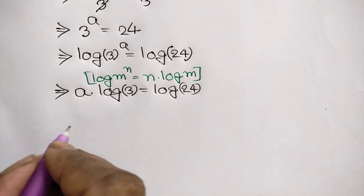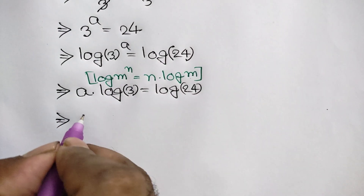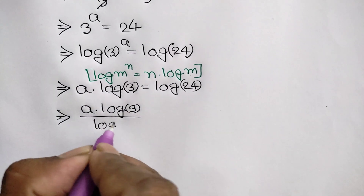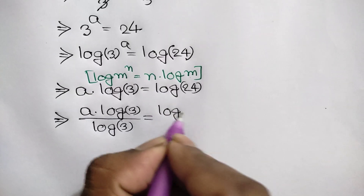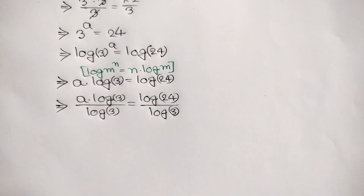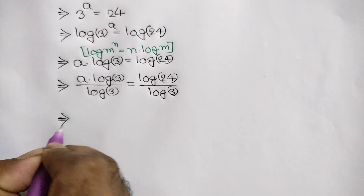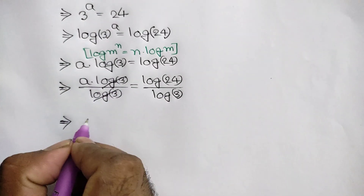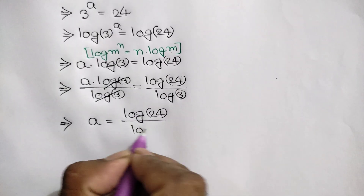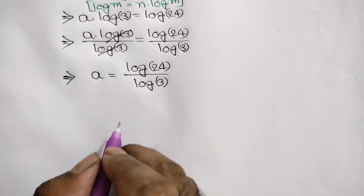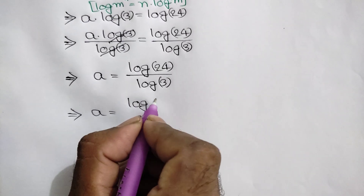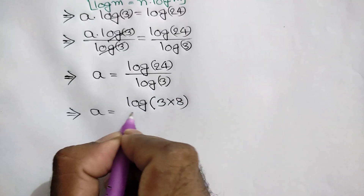Applying this formula, we can write a times log of 3 is equal to log of 24. Now dividing both sides by log of 3, this log of 3 cancels, so we get a is equal to log of 24 over log of 3.